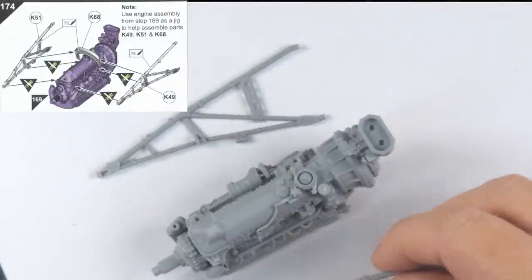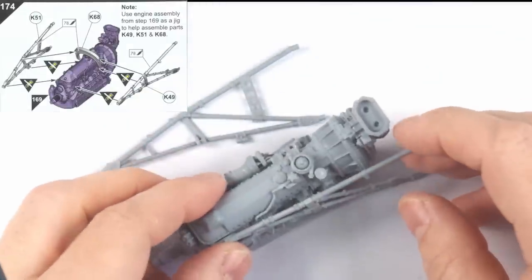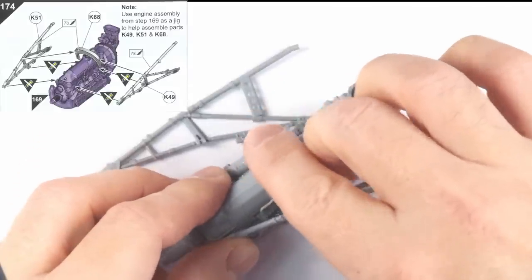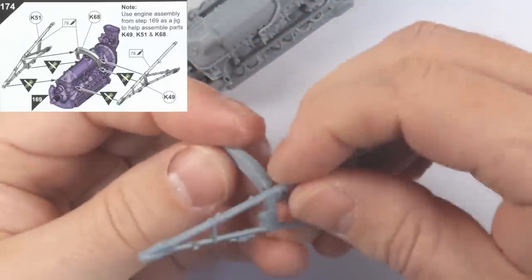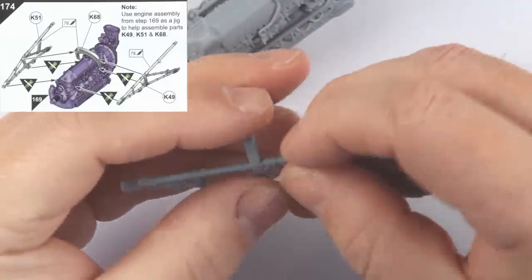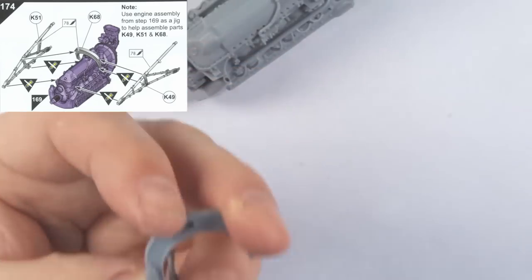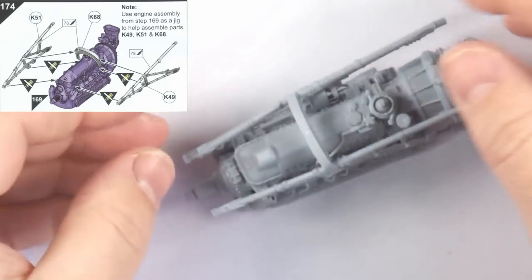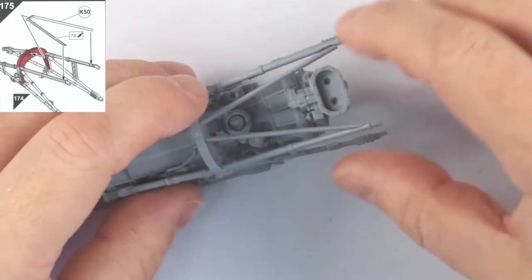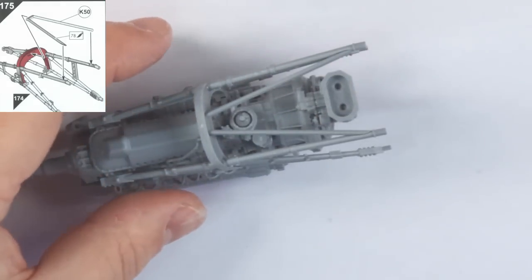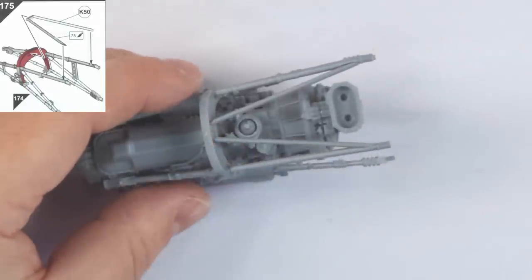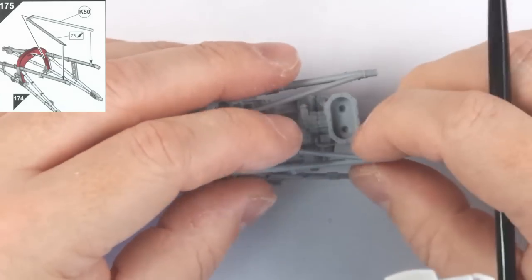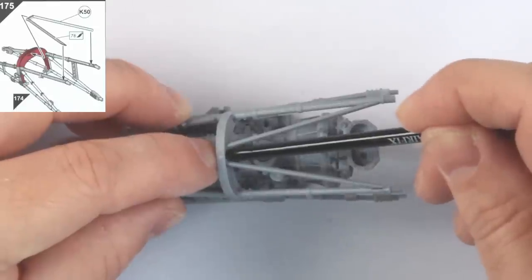We can then skip ahead once more to step 174 where we form the engine mount, using the engine as a jig. This is actually much easier than I was expecting and the pieces go together without any issues. Step 175 adds to the lower bracing, which again is added without any real issues. The main thing here is to make sure the assembly is hitting all the correct places on the engine and then leave it to dry completely before trying the next step.